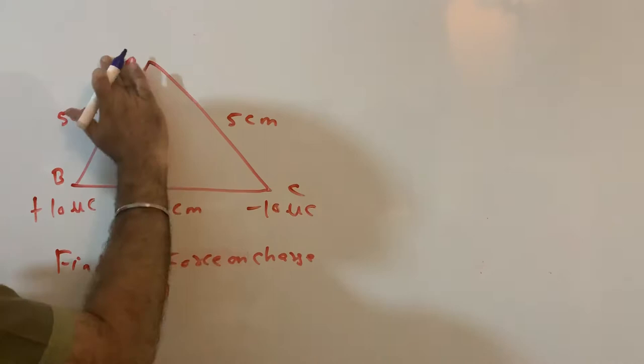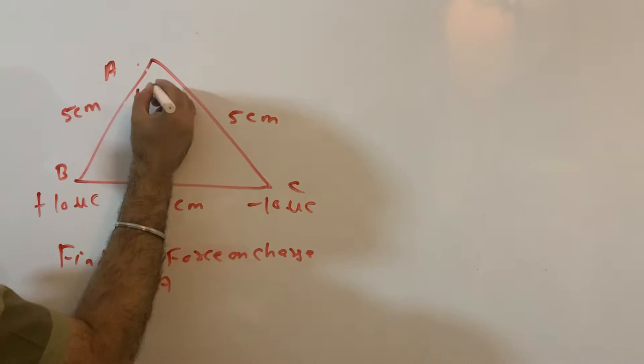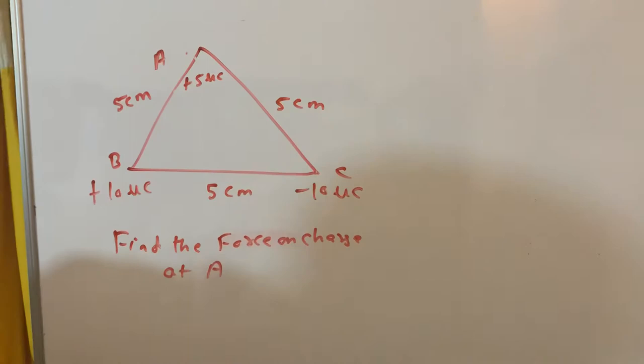He's telling find the force on charge A. This is also +5 microcoulomb. Force on A due to B: both are positive charges, so this force will act in this direction.